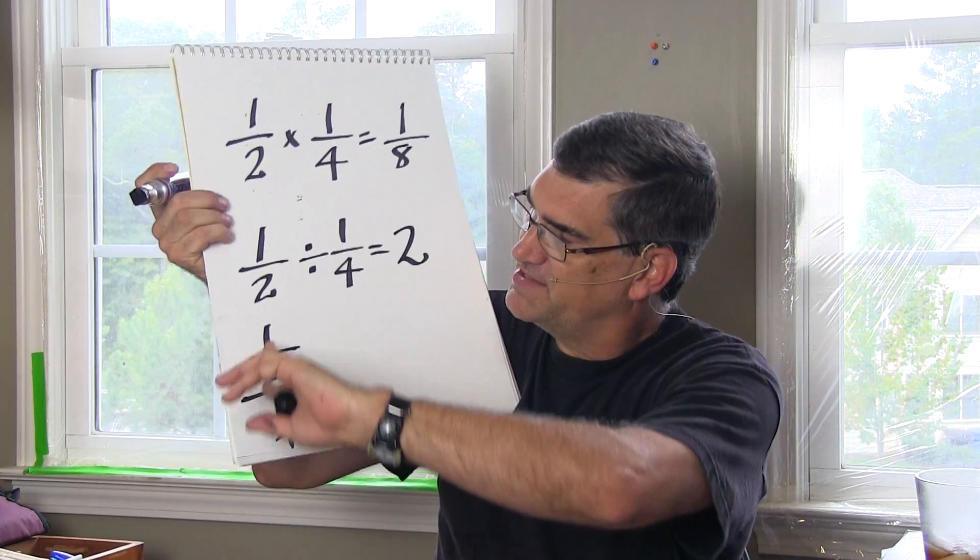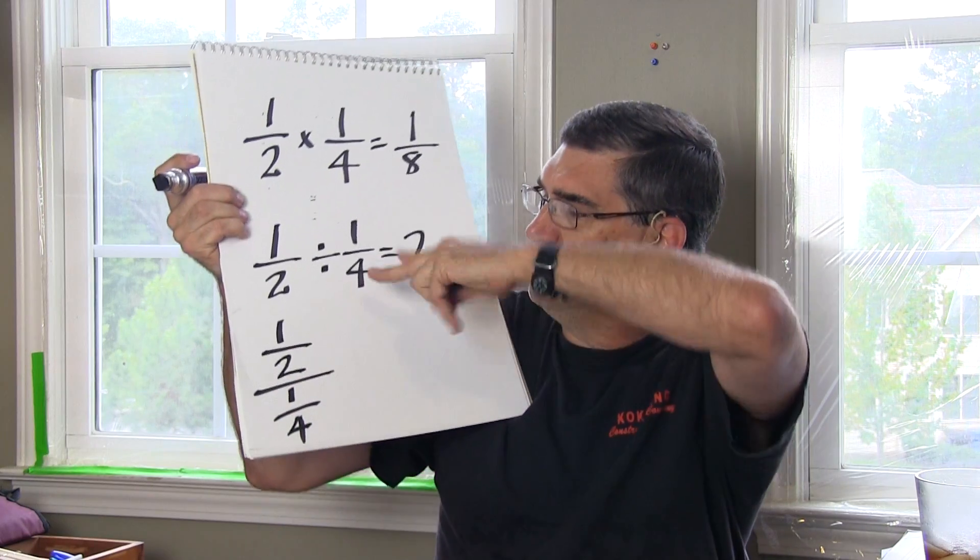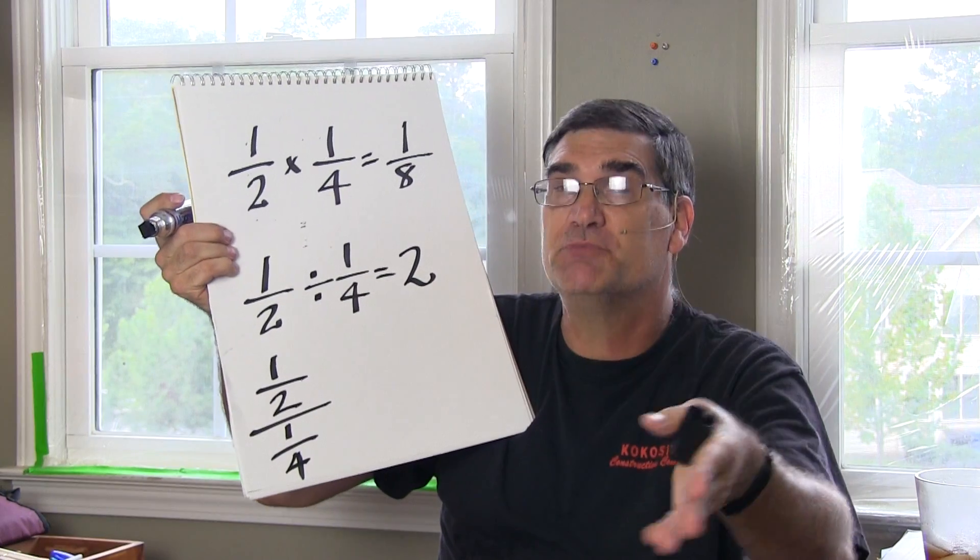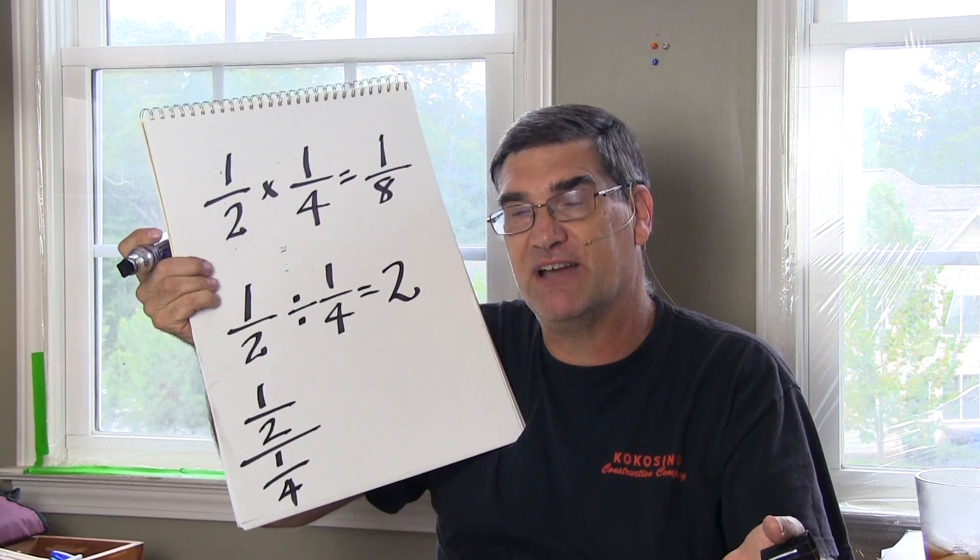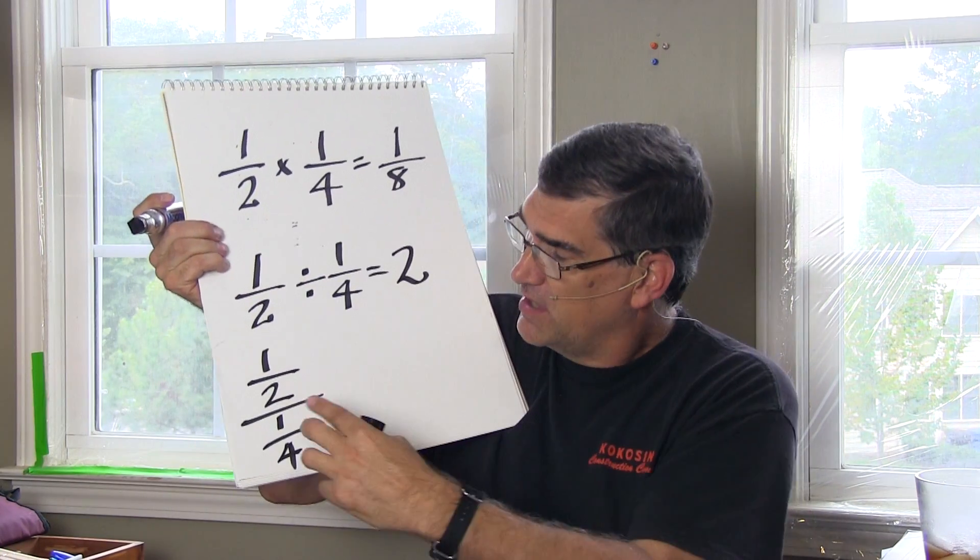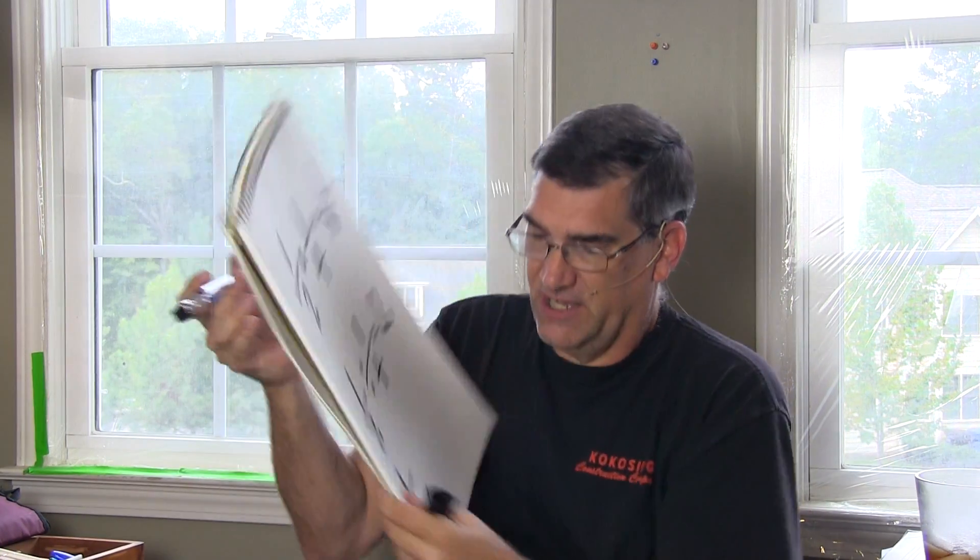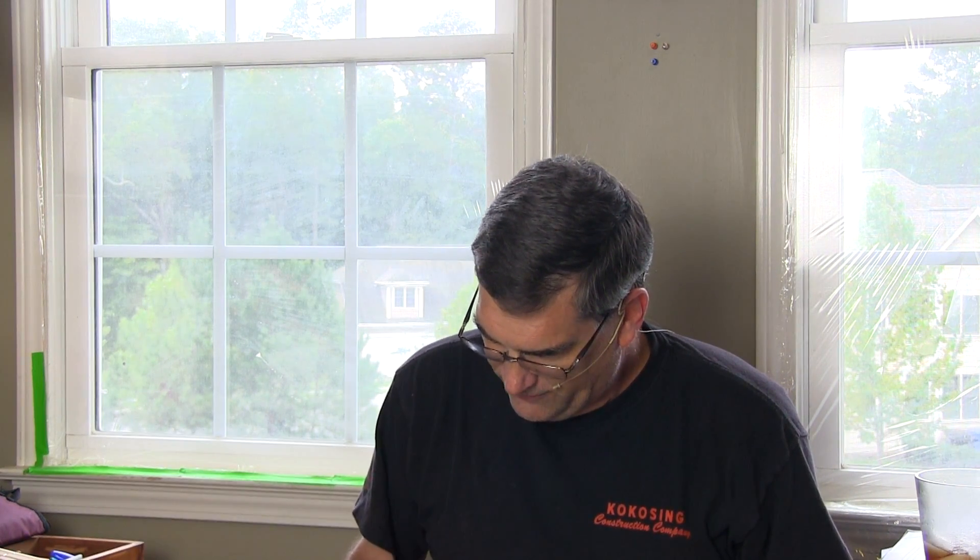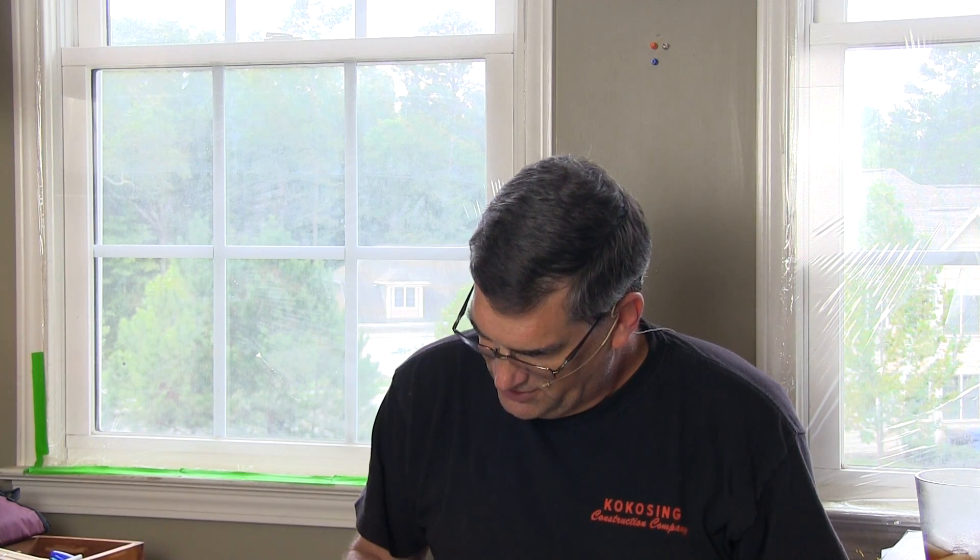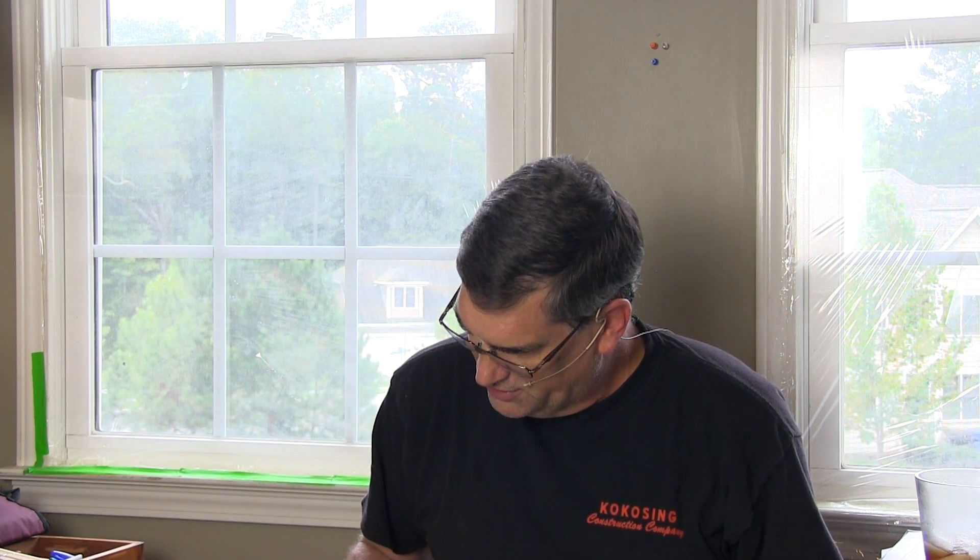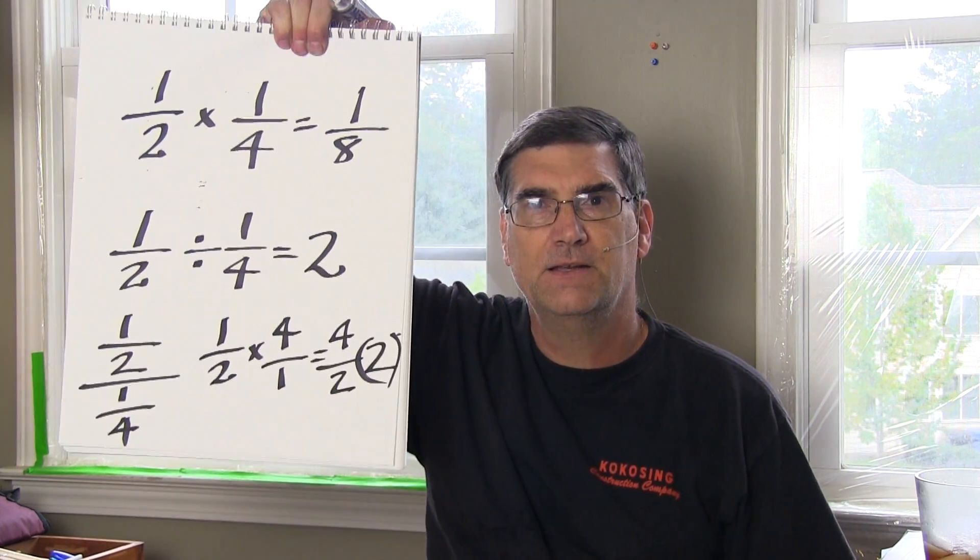So what they're going to say is take the one half, put it over here, take the one quarter, flip it over, and then multiply. Well, this is why the multiplication is so important because you're going to multiply fractions even when you're dividing them. So that's why you do multiplication first. Well, then when you flip it over and you get one half times four over one, the answer is four over two or two. I didn't draw that very well, but there you go.